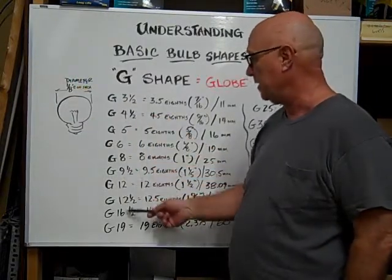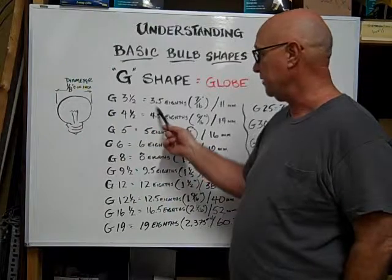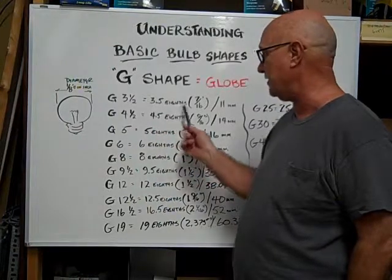the number following, like this G 3½ is equal to 3.5 eighths of an inch.